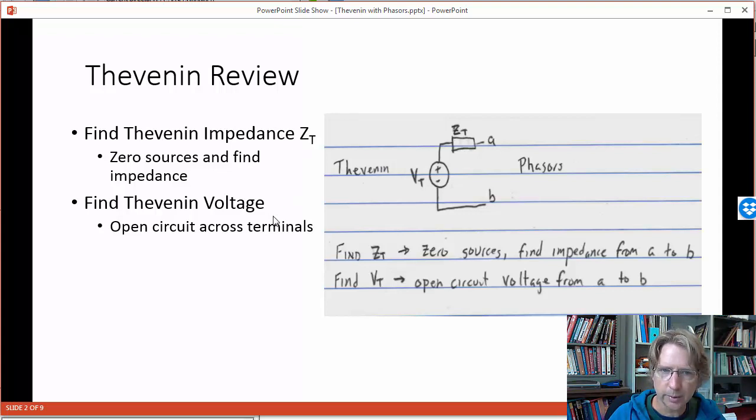Thevenin voltage is also going to be a phasor and it's a two-step process. The first step, finding the impedance, we zero all the sources in the circuit and then find the equivalent impedance from A to B using parallel and series. The second step is to find VT which is the open circuit voltage from A to B. So normally a node analysis is done here.